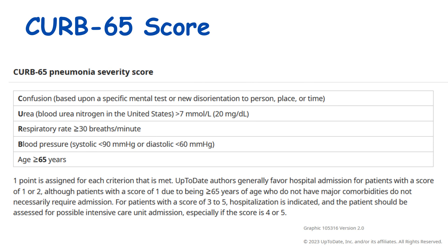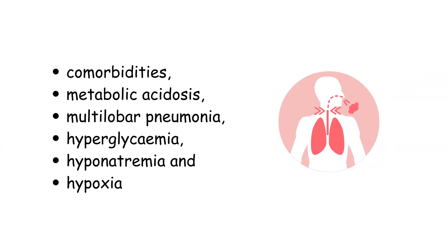The CURB-65 score evaluates the severity of community-acquired pneumonia with five points, one point given for each feature present: new onset confusion; urea levels more than 42 mg per deciliter; respiratory rate more than 30 per minute; blood pressure — systolic less than 90 or diastolic less than or equal to 60; and age more than or equal to 65 years. Other features indicating severity include associated comorbidities, metabolic acidosis, multilobar pneumonia, hyperglycemia, hyponatremia, and hypoxia.